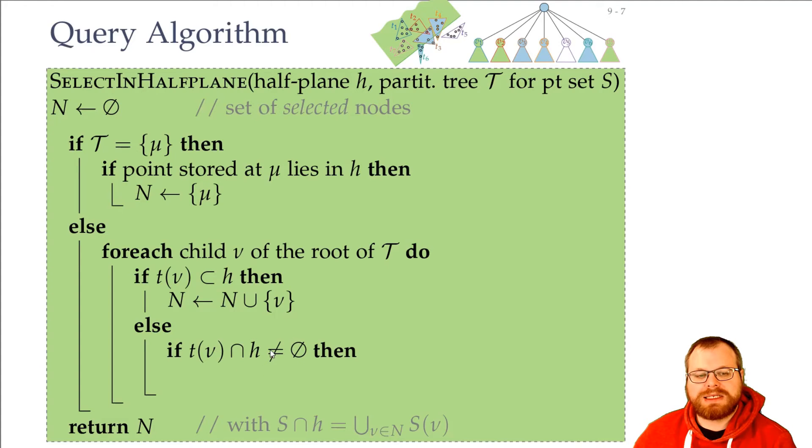But if it partially lies inside, like T3, T4, and T6, then we have to recursively call the algorithm. So we take the set N and we add all those canonical subsets that we find in the recursive approach.